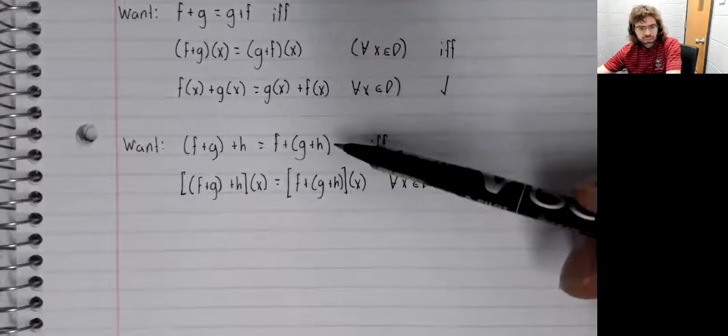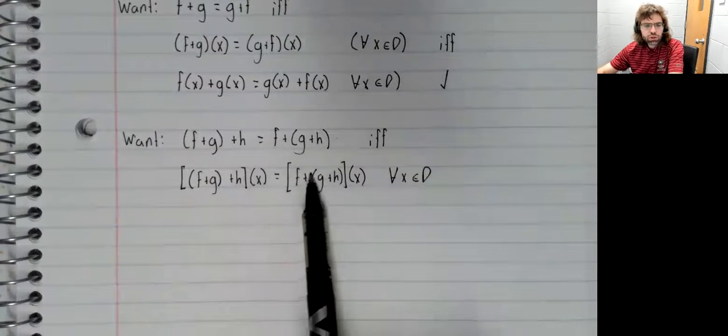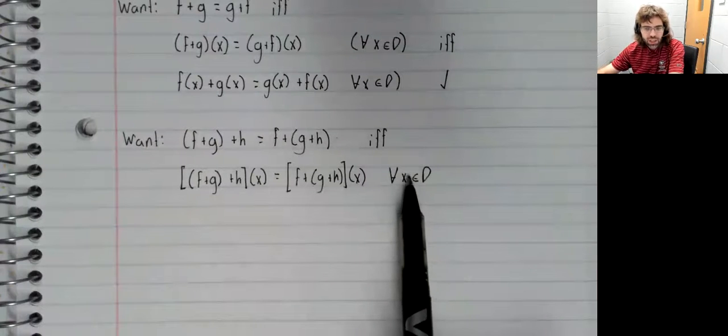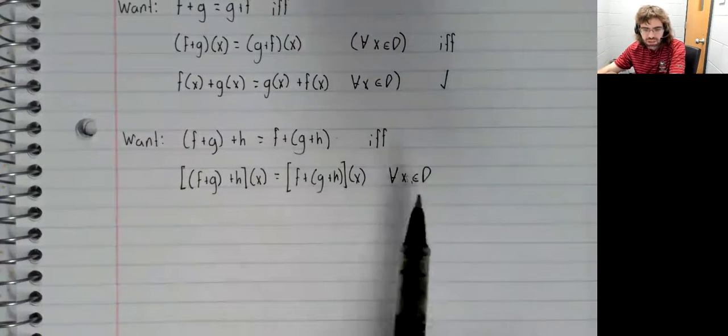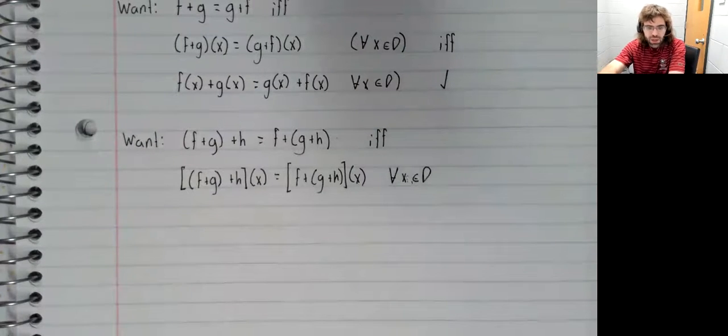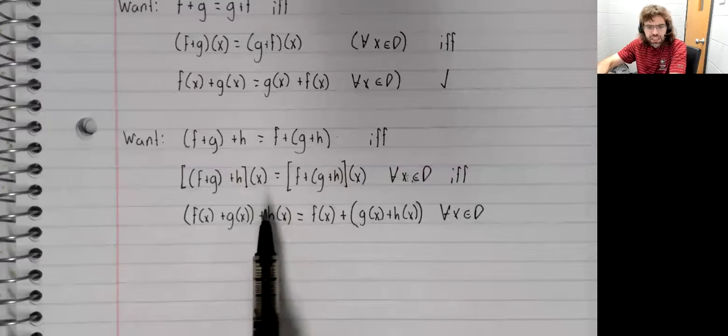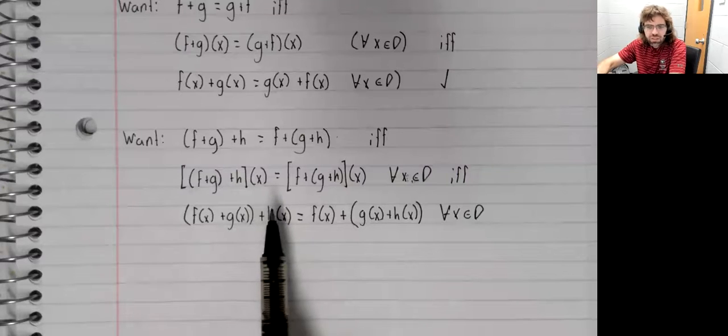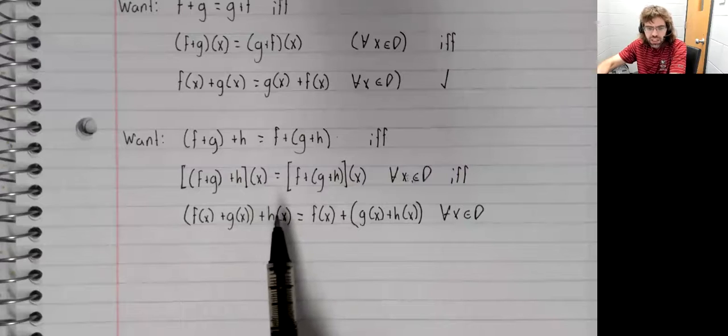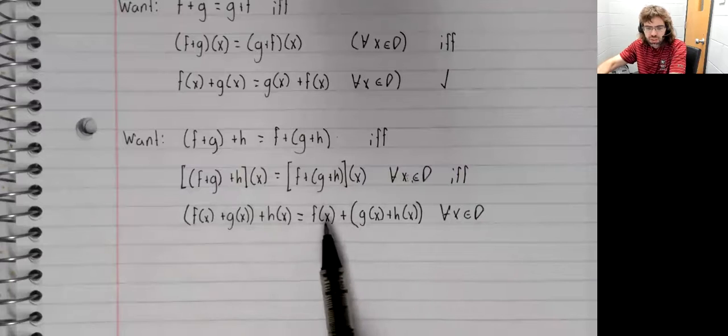We go from a statement about functions to a statement about real numbers, albeit an infinite number of real numbers, a statement about every real number in D. But then this statement about real numbers is just trivially true.